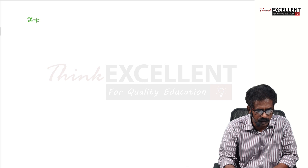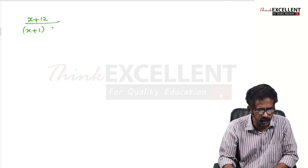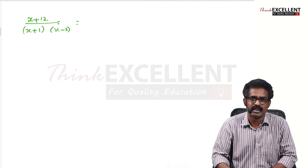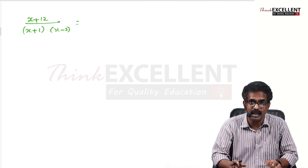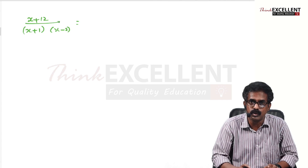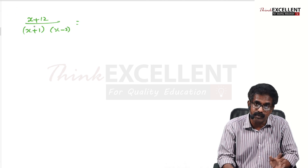The first type: suppose the question is (x + 12) divided by (x + 1)(x − 2). This is a first type partial fraction because the denominator is already factorized and both factors are degree one — no square, no cube. We have already studied this.